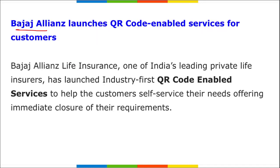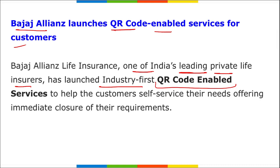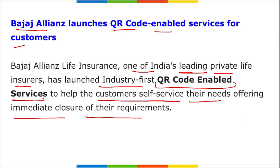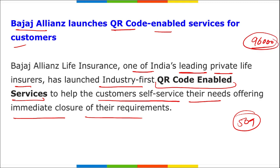Bajaj Allianz Life Insurance, one of India's leading private life insurers, has launched India's first QR code-enabled services to help customers with immediate closure of their requirements. This QR code service will be available across all 509 branches of Bajaj Allianz. The Pune-based company began operations in 2001 as a joint venture between Bajaj Finserv and German financial service major Allianz, and has around 96,000 agents.